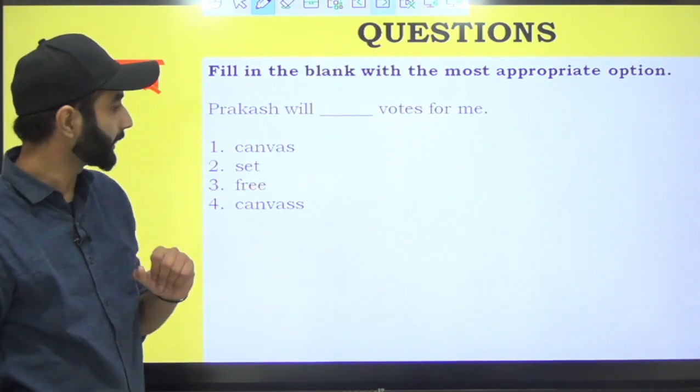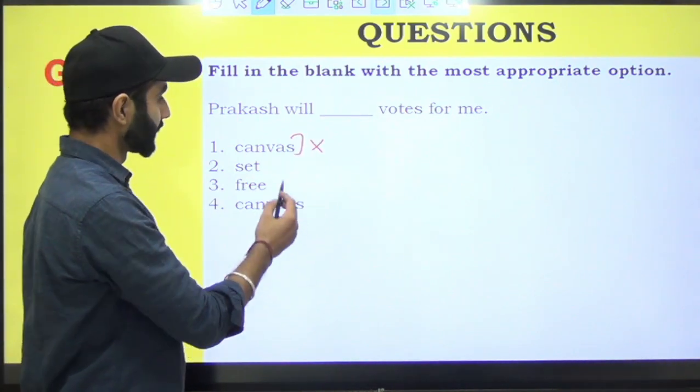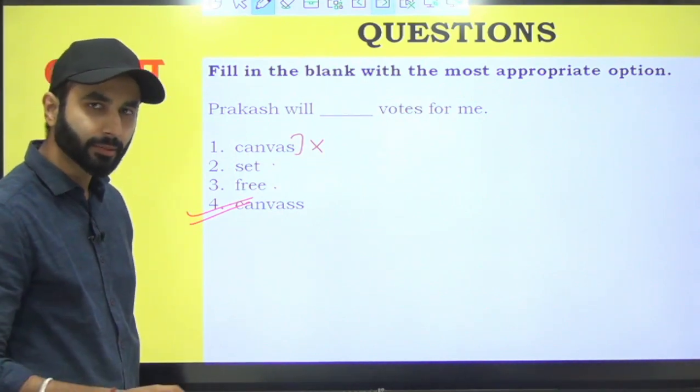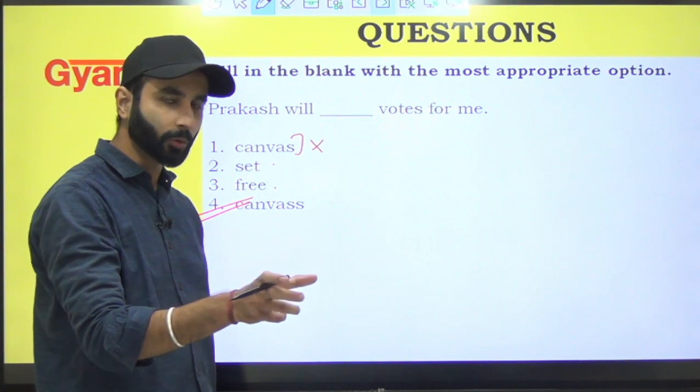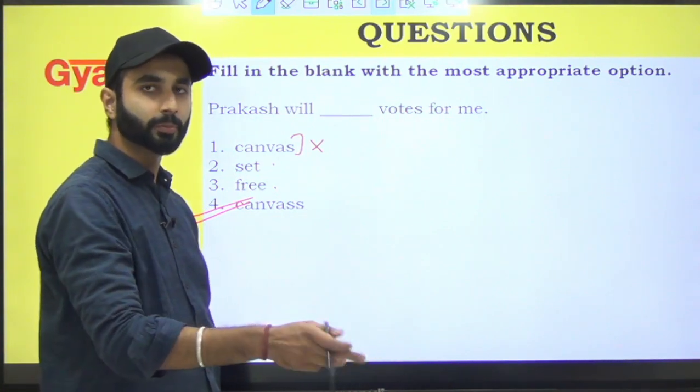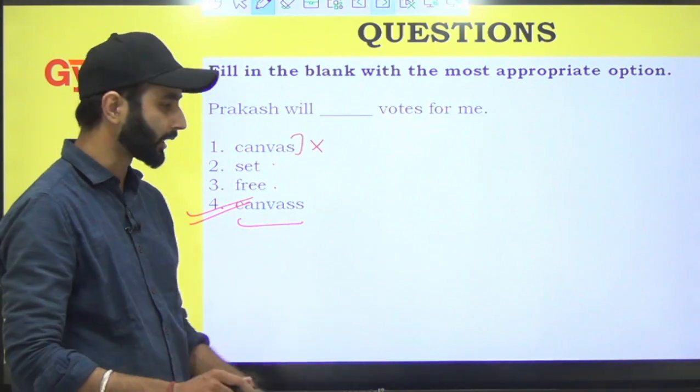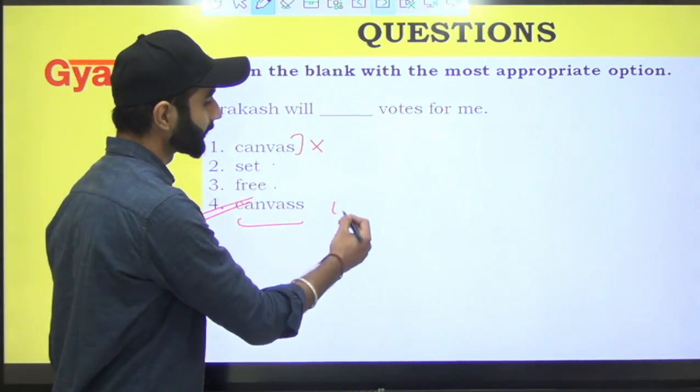Prakash will dash votes for me. Canvas. Canvas painting wala nahi hoga. It is canvas with double S. Iska matlab kya hota hai? Aap chahte hai ki aapka vote legally count ho jaye. So canvas votes ka matlab hota hai count karna. That my vote should be legally counted. The answer is four.